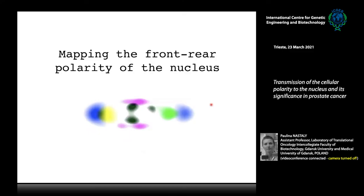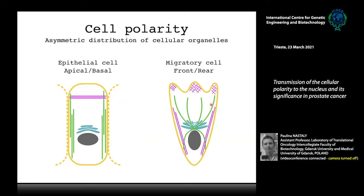I'll start with the first part: mapping the front-rear polarity of the cell nucleus. There are two main types of polarity present in cells. The first, present in epithelial cells, is called apico-basal polarity. The second is present in migratory cells and is called front-to-rear polarity. This cell polarity is associated with the asymmetric distribution of cell organelles, the overall cell architecture, and distribution of various proteins.